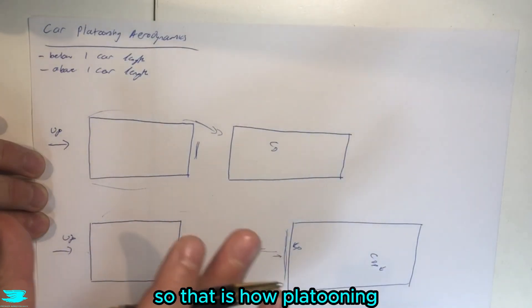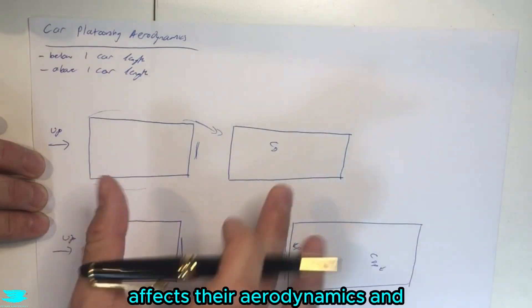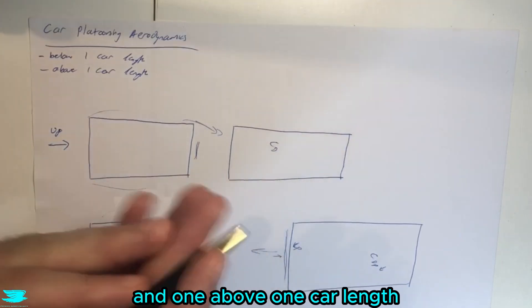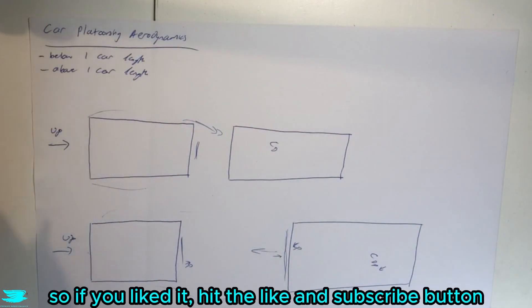So that is how platooning, putting two cars in sequence or more, affects their aerodynamics. And there are two phases. There's below one car length and above one car length, and the effects on the drag and lift coefficient. So make sure to like and click the subscribe button. And we'll see you soon. Peace, amigos.